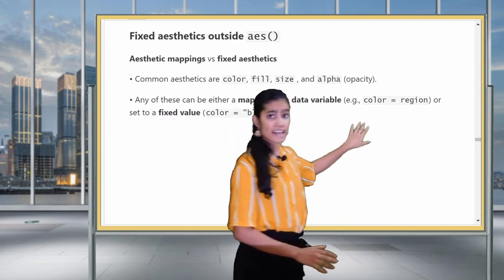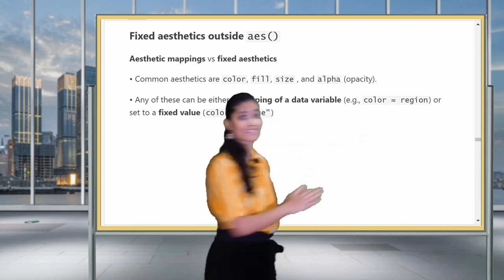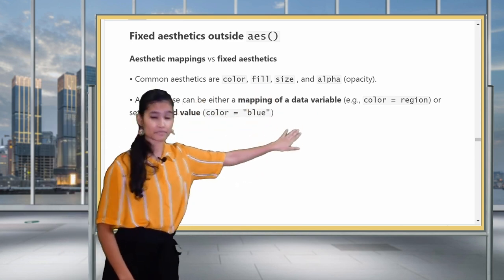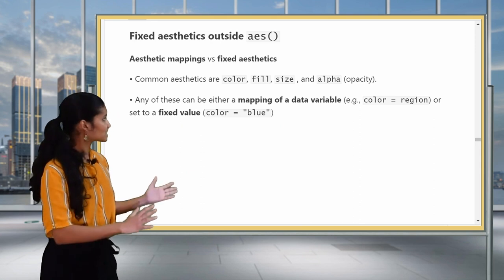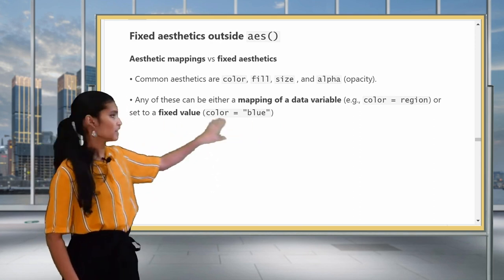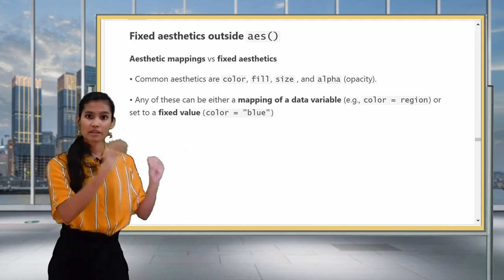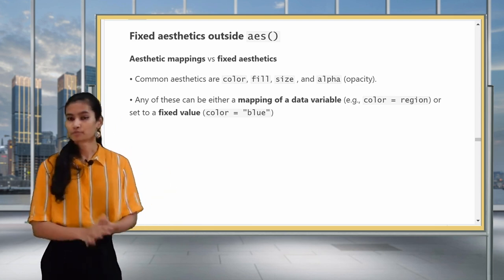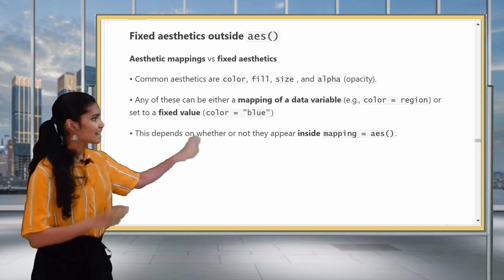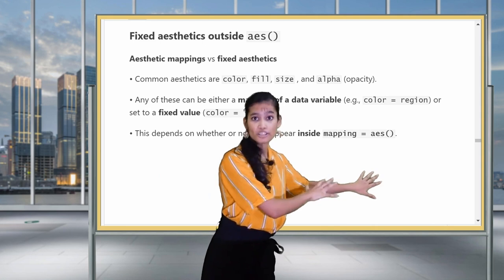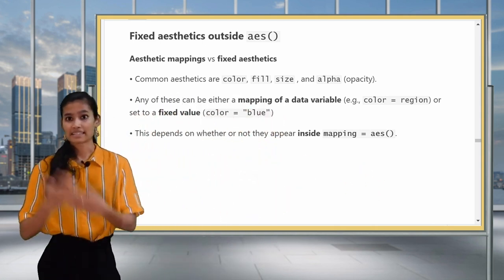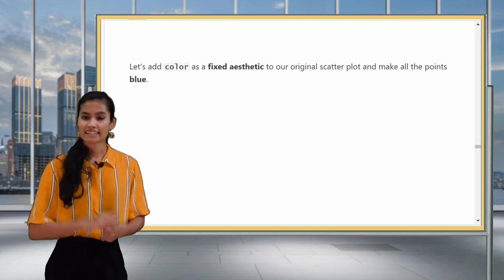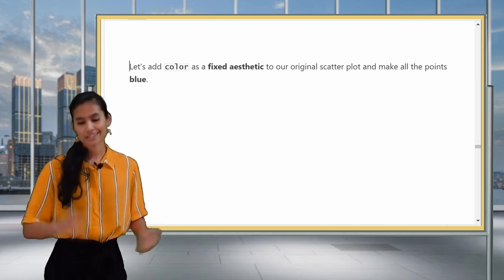Now these all could be either aesthetic mappings, as we've mapped color and fill so far, or they could be fixed aesthetics. For example, we already did color as an aesthetic mapping and called color equal to region, and then the data variable region was mapped to color. So aesthetic mappings use data. But aesthetics that are fixed are equated to a constant value, like color equals blue. Then the geometric objects or their shapes, whether they be points or lines, aren't going to change depending on the data, they'll just all be blue. This all depends on whether you put it inside the mapping equals AES argument in ggplot2.